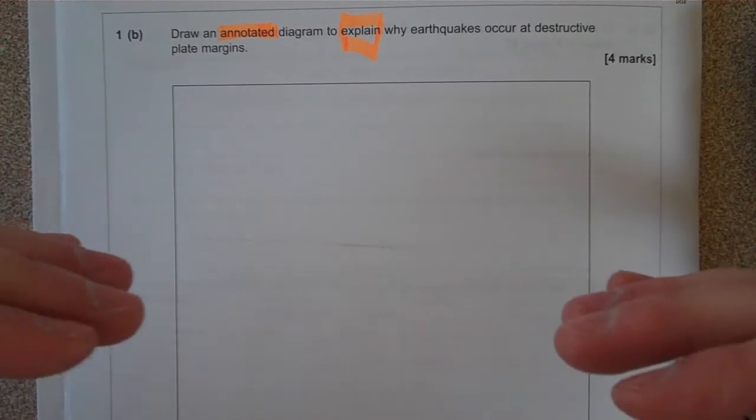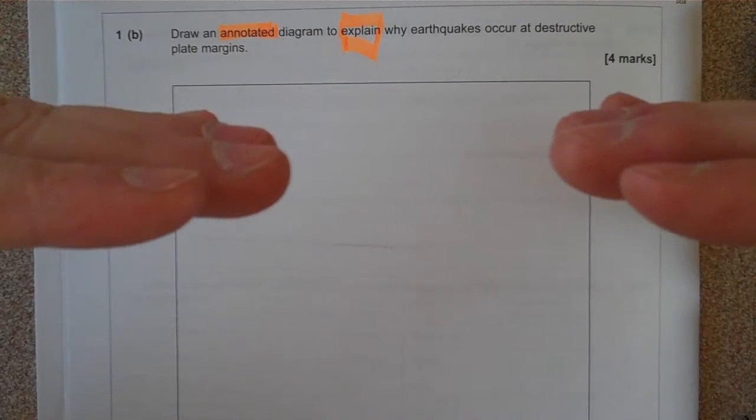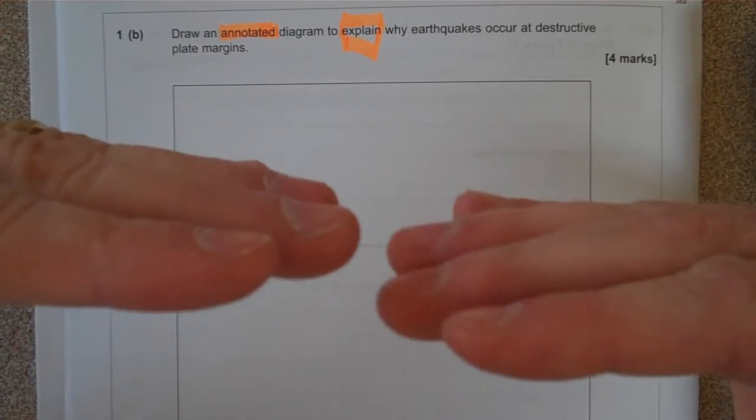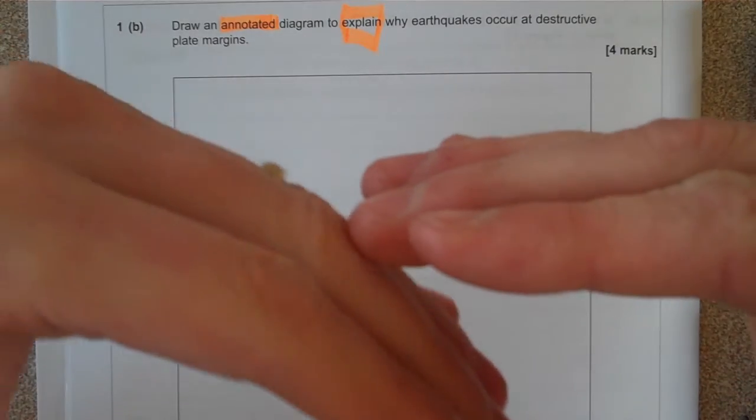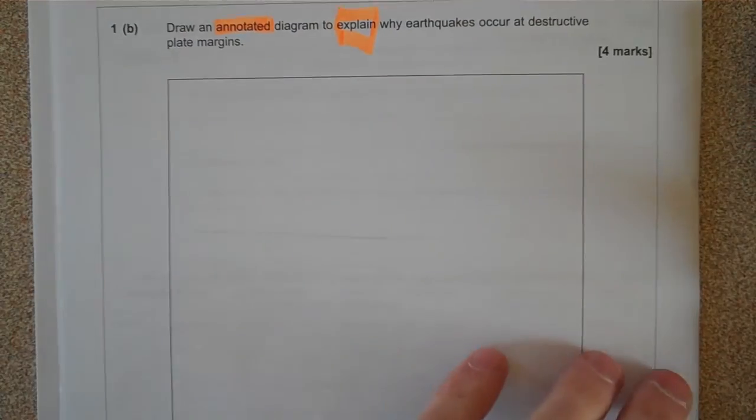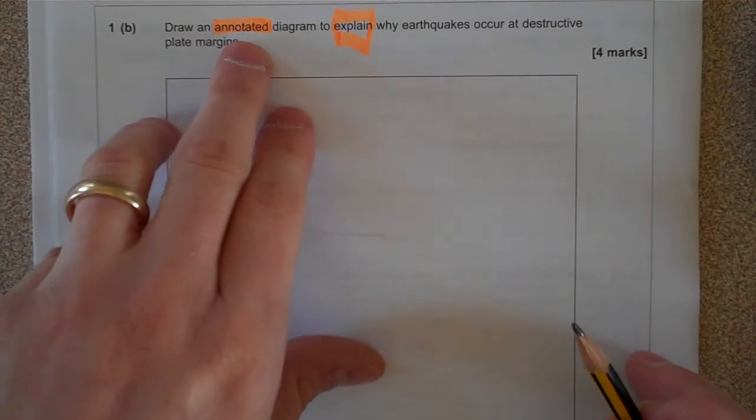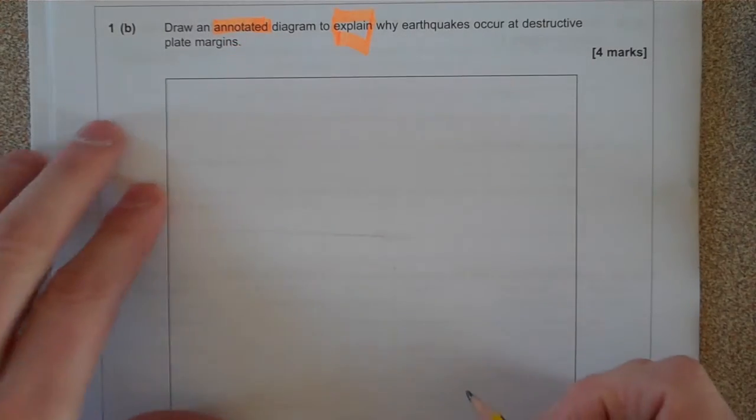So we've got to remember, first of all, plate margins are where plates are moving away or apart and at a destructive margin, one plate is going down underneath the other, so that's what we need to draw. And then we've got to annotate it to explain what's going on.